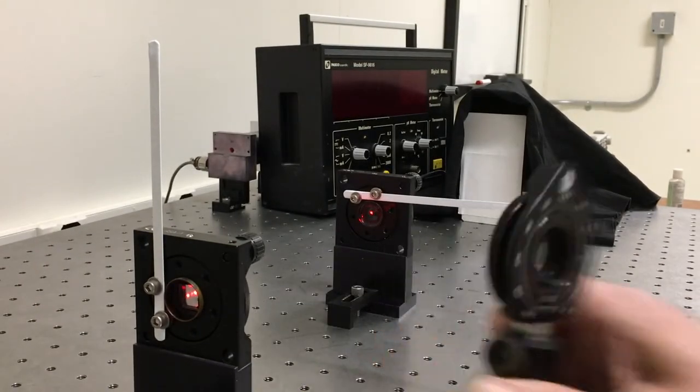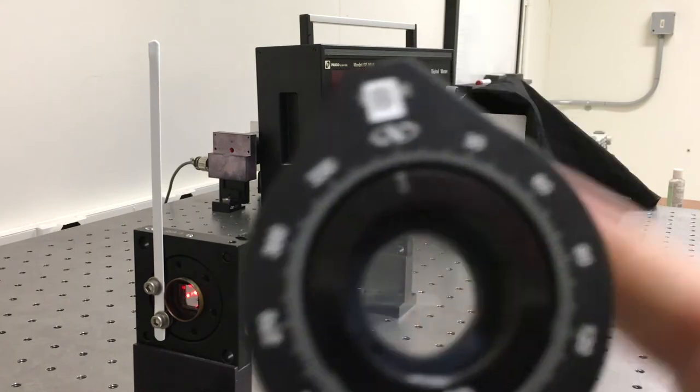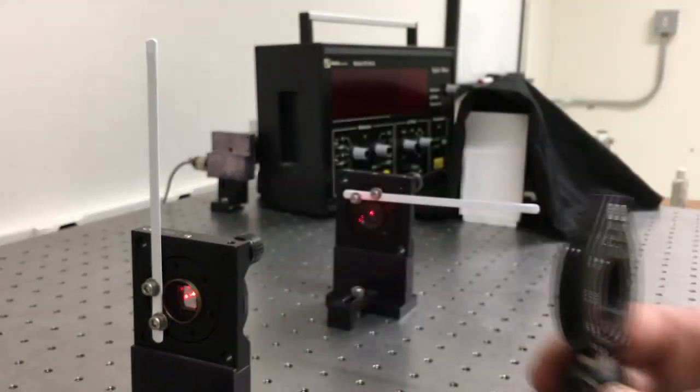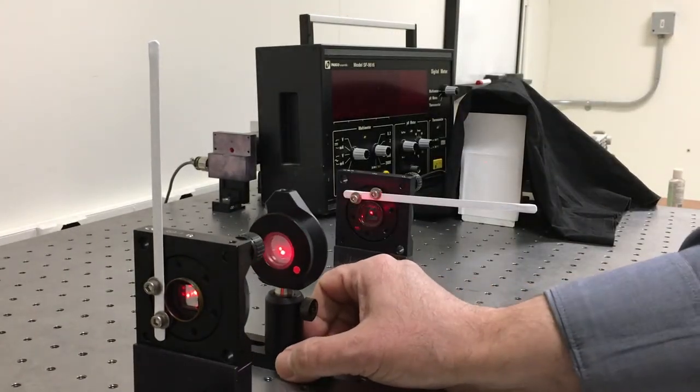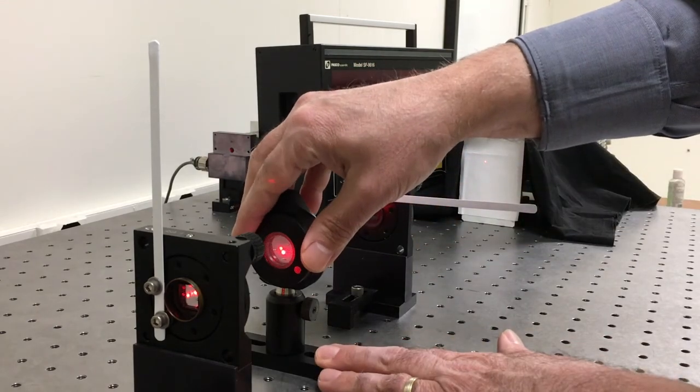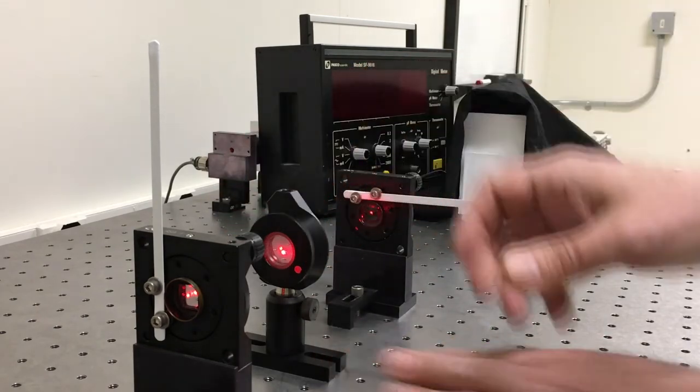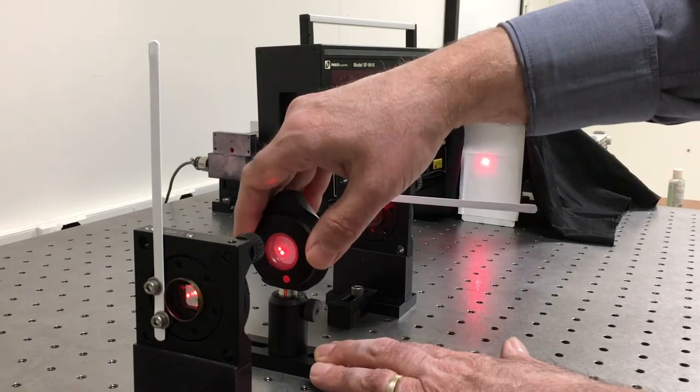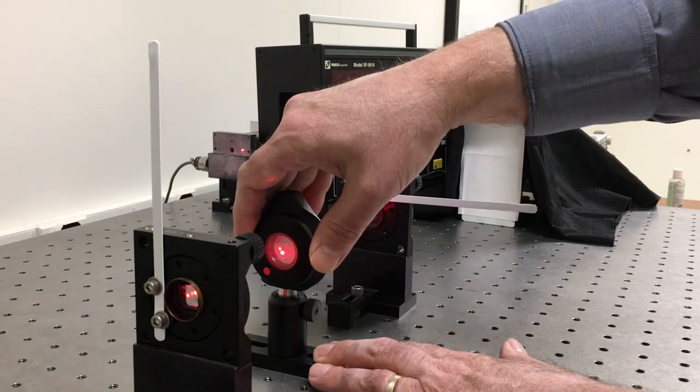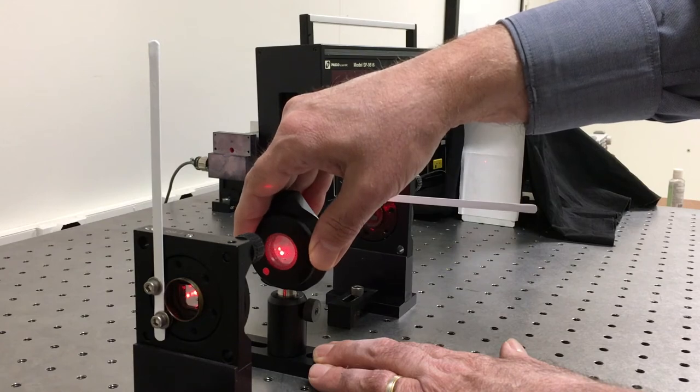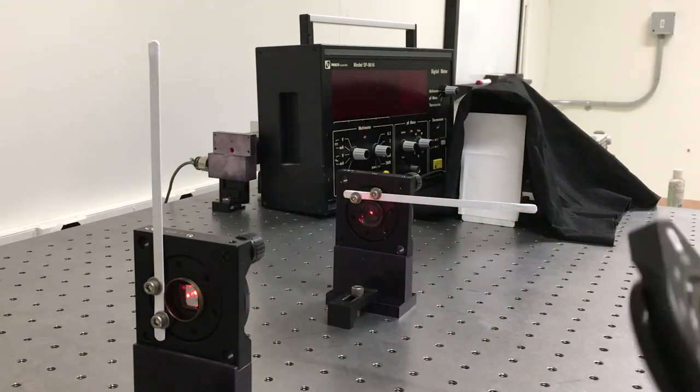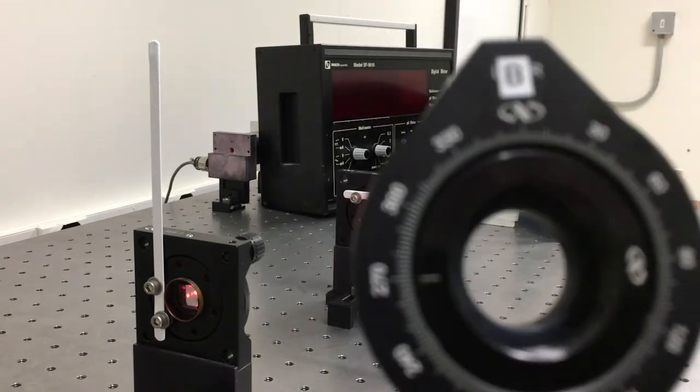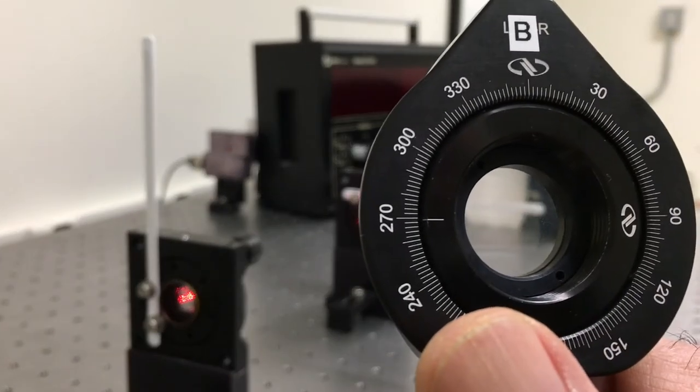I can do the same thing with the B slide. I will start with the index mark at the top. Put it in as though, yes indeed, that is one of my axes. And then I can rotate it to find, yes, there's another axis right there. Also at 90 degrees away.